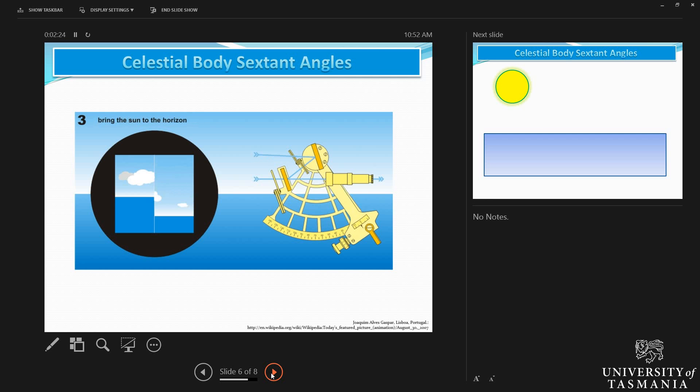Once again, you can see what is happening here: you keep it at 0 degrees and 0 minutes, bring the celestial body down onto the horizon, make sure that the body is just kissing the horizon, the lower limb of the sun is just kissing the horizon.